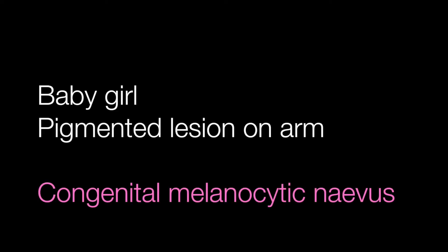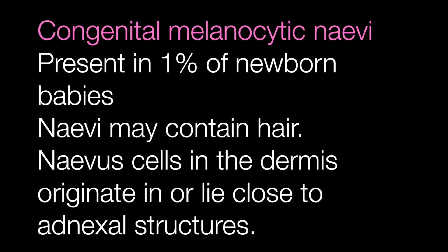The pigmented lesion on the arm of the baby girl was a congenital melanocytic nevus. Congenital melanocytic nevi are present in approximately 1% of newborn babies. The non-giant nevi may contain tufts of hair. Histologically the nevus cells can be seen in the dermis to originate either in or lie close to adnexal structures.